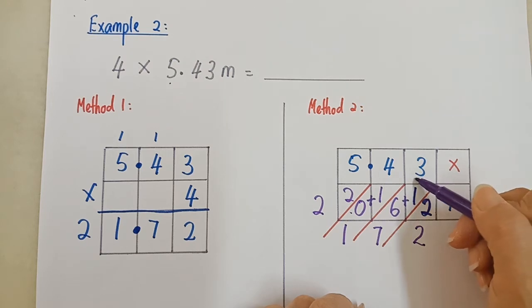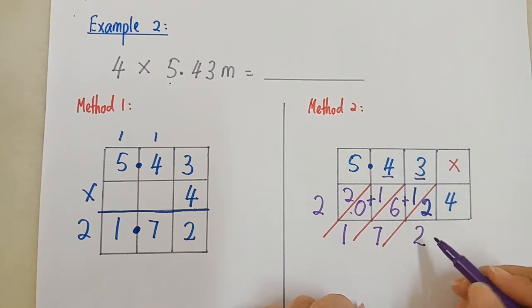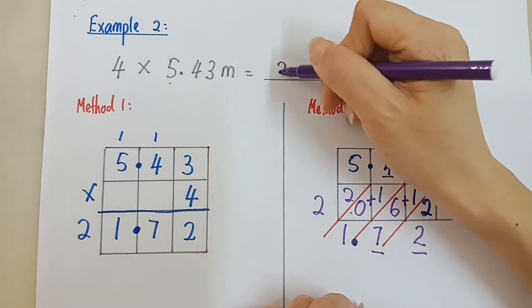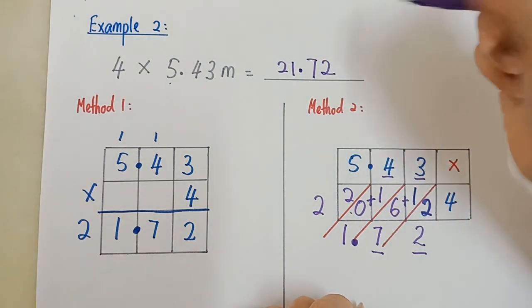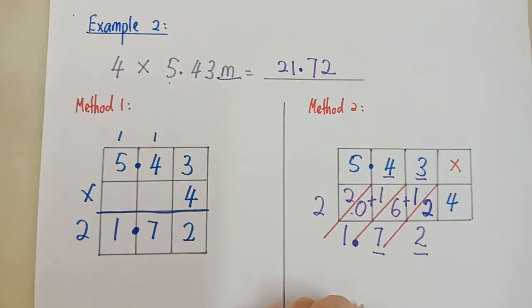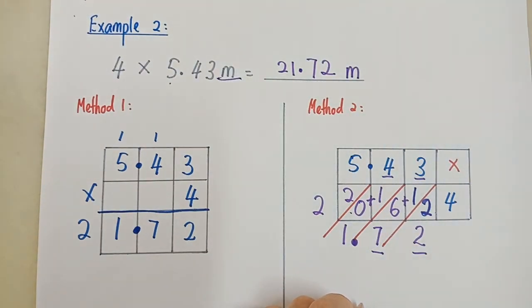Jangan lupa, point. 1, 2. 2 decimal place. Jawapan pun sama. 1, 2. Point sini. So the answer is 21.72. Tengok sini ada unit dia M. So you put meter behind.